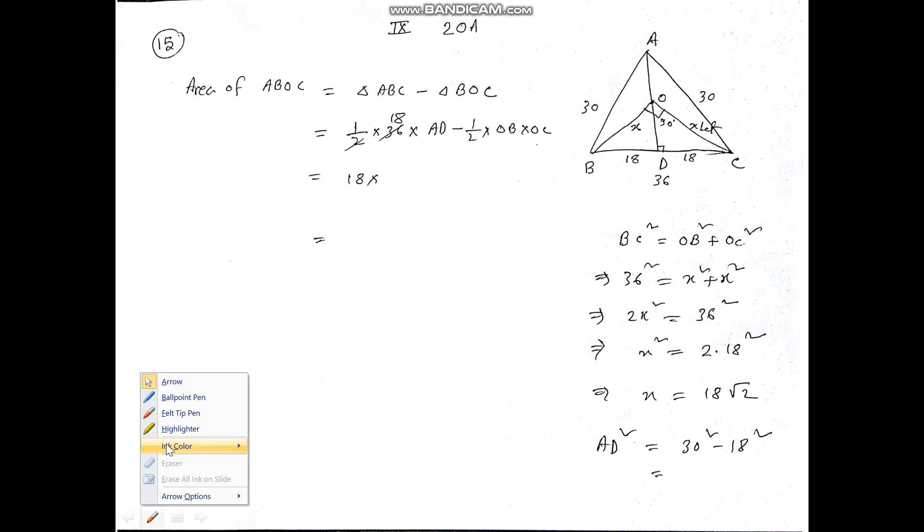Okay, now let us do number 15. AD is the altitude of an isosceles triangle ABC. AB is equal to AC is equal to 30 centimeters, and BC is equal to 36. Since it is an isosceles triangle and I have drawn a perpendicular, the base will be bisected, so 36 becomes 18 and 18, and this angle is 90 degrees.